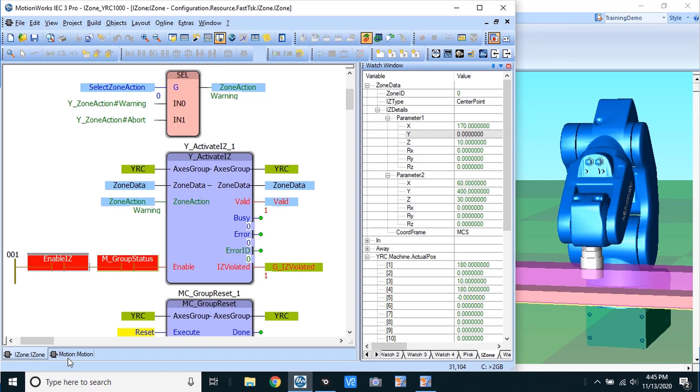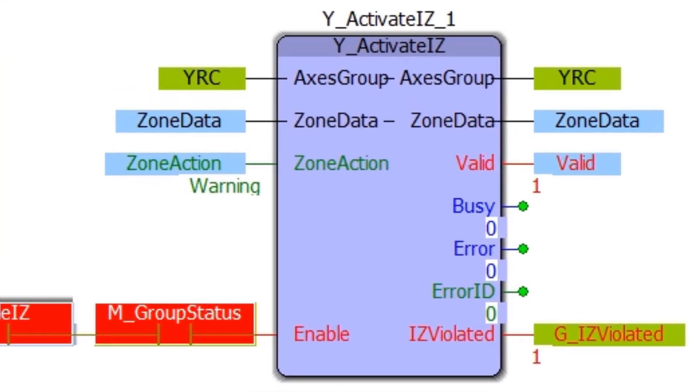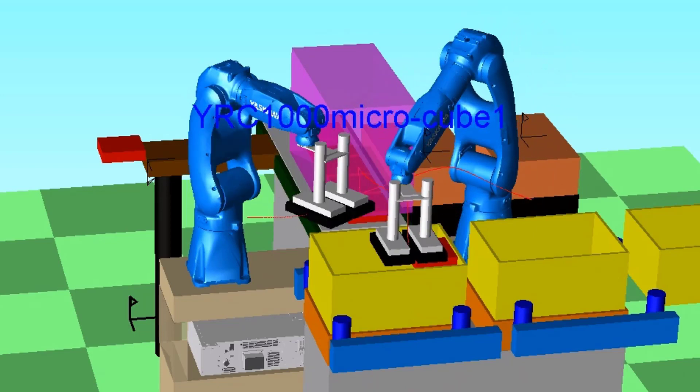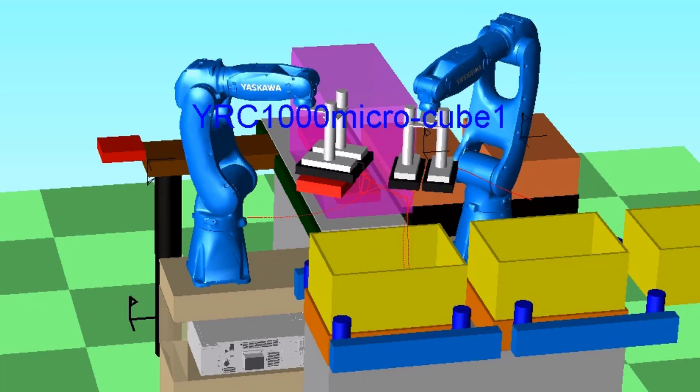Interference zones are implemented using the Y_ActivateIZ function block. They are useful for preventing collisions and controlling sequences at the application programming level.